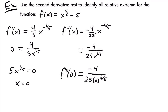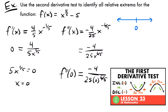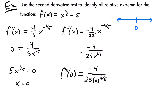We have to go back to the first derivative test to find our relative extrema. Even though the problem says to use the second derivative test, if it fails, you revert to the first derivative test. Since we already know our critical value, we draw our number line with intervals from negative infinity to 0 and from 0 to positive infinity, and we'll test a value in each interval on the first derivative.